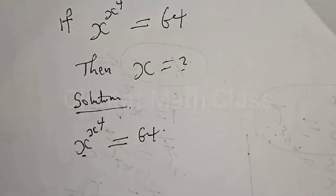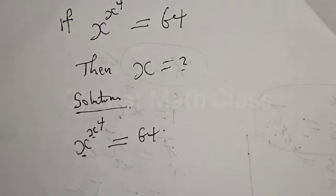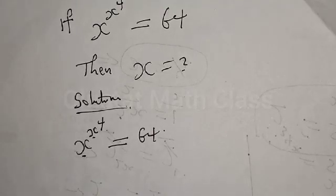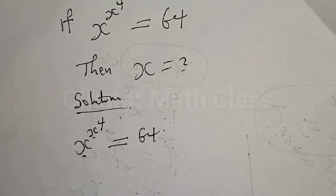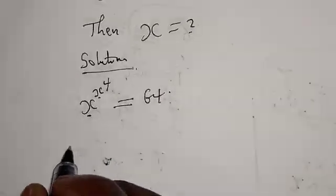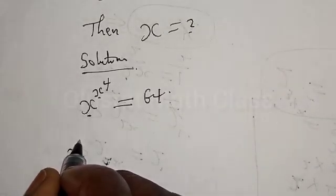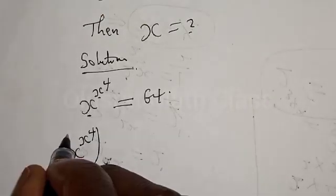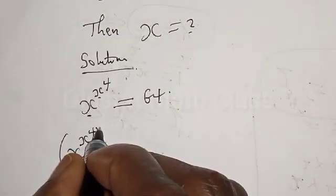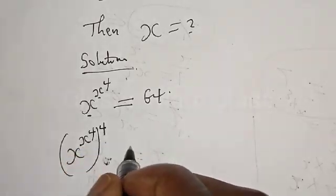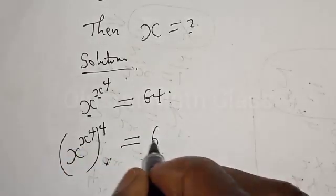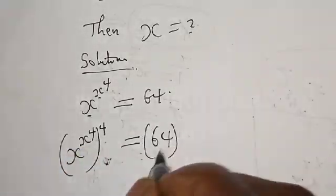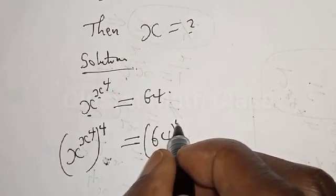Here s is the base and we also have s raised to the power of 4 in the exponent. The next thing is to multiply both sides by the power of 4. That is, x raised to power s raised to power 4, all multiplied by the power of 4, equal to 64 raised to the power of 4.